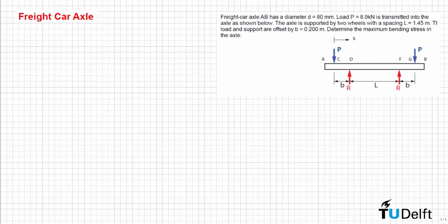In this problem we have axle AB, which has a diameter d equal to 18 mm. We have a load P equal to 8.9 kN, which is applied at point C and at point G. The axle is supported by two wheels with a spacing L equal to 1.45 m. The load and support are offset by b equal to 0.2 m. We have to determine the maximum bending stress in the axle.